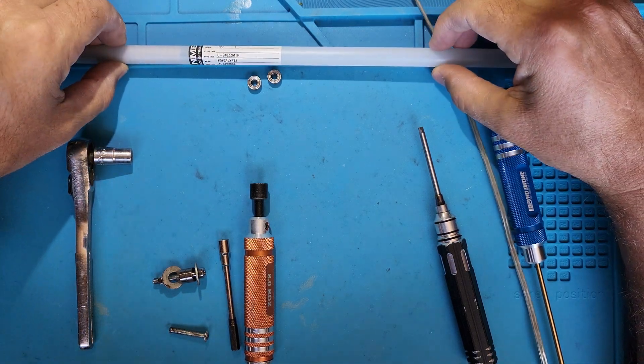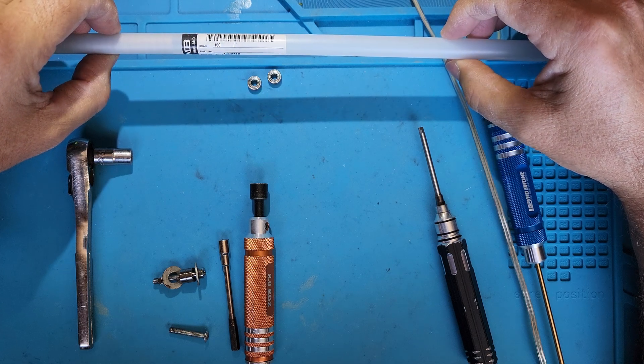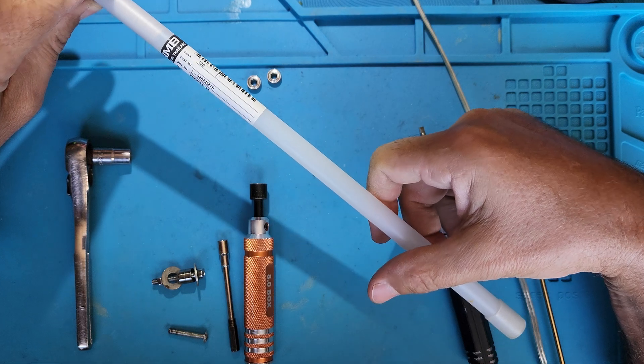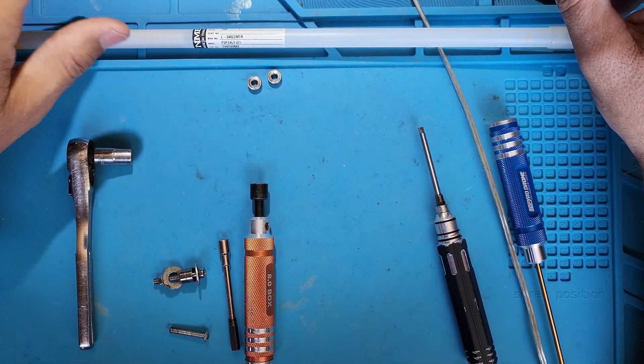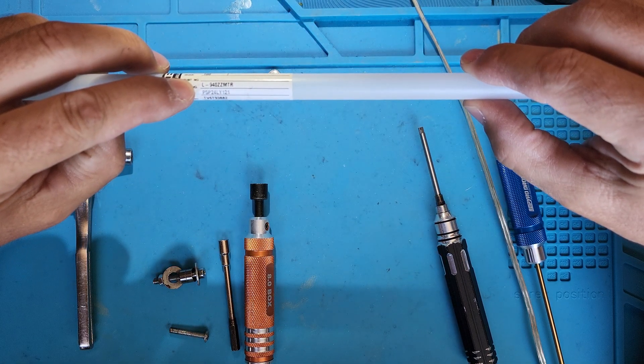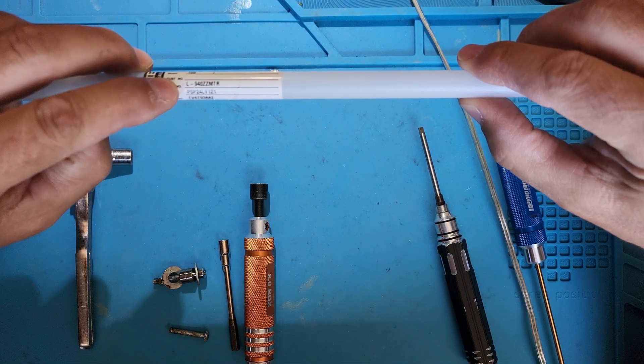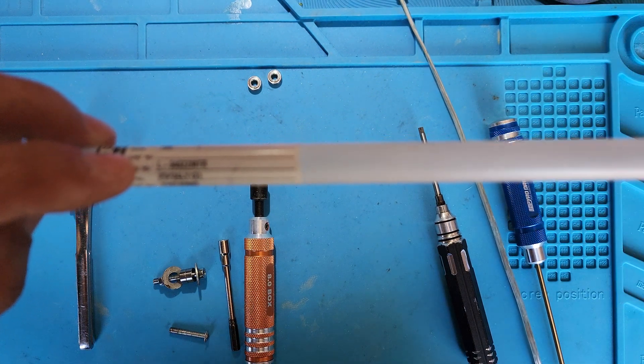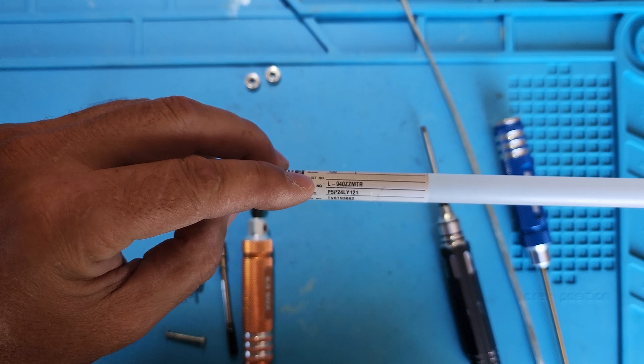I like to use the NMB bearings right here. Normally I get them by the hundred. They are by far the best bearings that I've used, they last the longest. These ones in particular are the L-940 ZZ MTRs if you guys can see that. There we go.